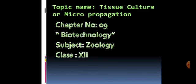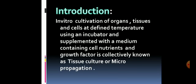Today's topic is about tissue culture or micro-propagation. This topic belongs to Chapter 9, titled Biotechnology, in secondary-level Zoology. The introduction: tissue culture is the in vitro cultivation of organs, tissues, and cells at a defined temperature using an incubator, supplemented with a medium containing cell nutrients and growth factors. In vitro means at the laboratory, outside the body of any organism.